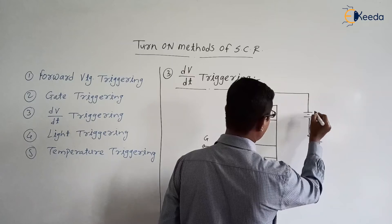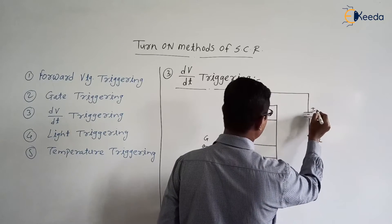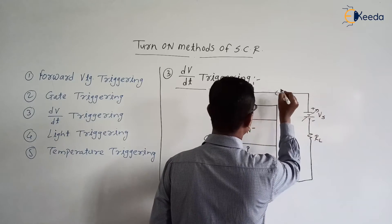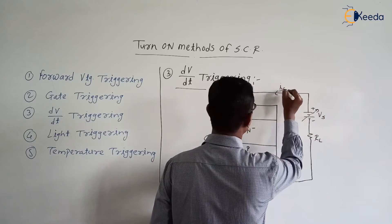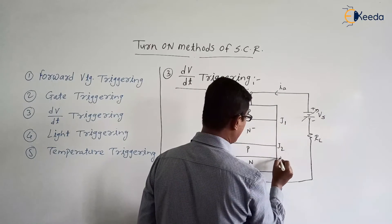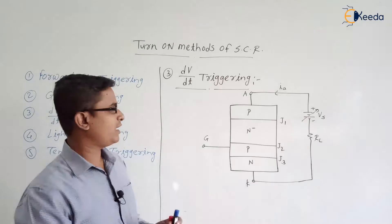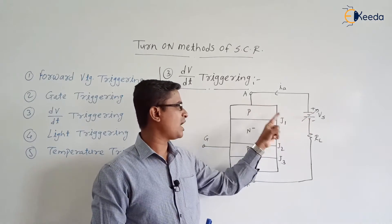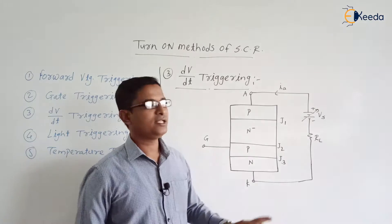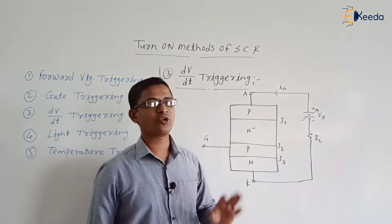This is RL, this voltage is Vs. Suppose this is the variable voltage; this current is Ia. We are having three junctions: J1, J2, J3. So when the positive plate is connected to the anode and the negative plate is connected to the cathode, initially our SCR is in the off state, but it is in the forward bias mode.